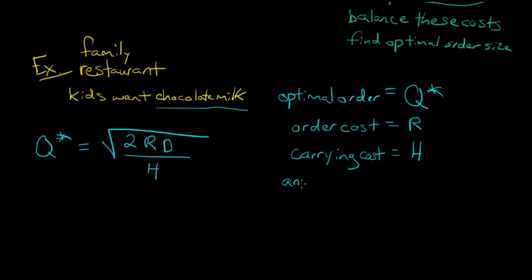But then up in the numerator, there's one other thing we need to know called D. Demand. Annual units demanded. How much chocolate milk is demanded? How much do people want in a year or whatever period we're talking about?